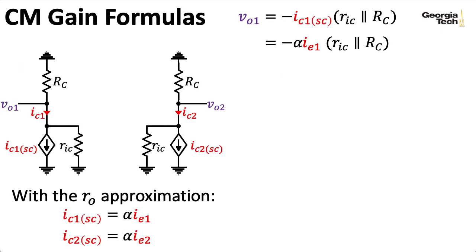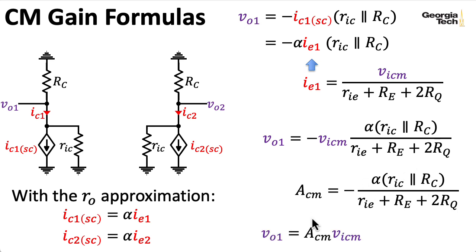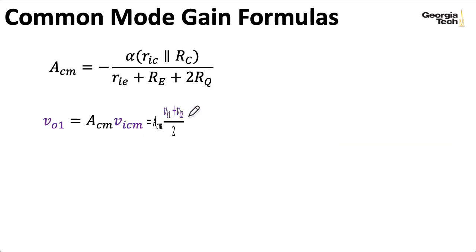So I can write the current IE1 using Ohm's law as just our voltage divided by the series resistance of RIE, RE, and 2RQ. So now if I substitute that formula for IE1 into our formula for the output voltage, we wind up with this expression here. And now I can define a common mode gain here called ACM according to this expression here. And now I can write the output VO1 as our common mode gain times our common mode input. Now rewriting these expressions on the next slide, remember that our common mode gain is just the average of the inputs VI1 and VI2. And because of the symmetry, VO2 is the same as VO1.